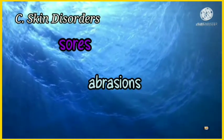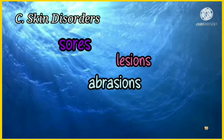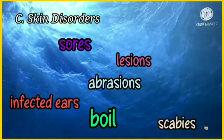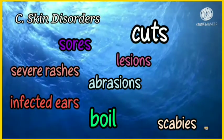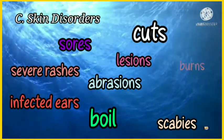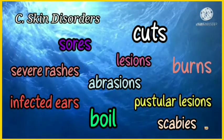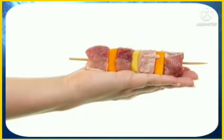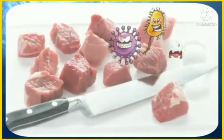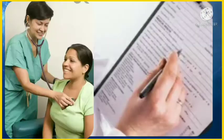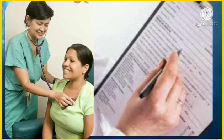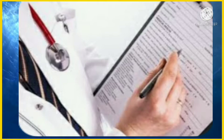Next is skin disorders, such as sores, abrasions, lesions, infected ears, boils, scabies, and severe rashes. The usual sites for harboring staphylococci are cuts, burns, abrasions, and pustular lesions. When an infected person handles food, the hazard of passing staphylococci from skin surfaces to food increases. That's why pre-employment physical examination is usually required for every person intended to work in a food processing plant, in order to establish freedom from diseases.